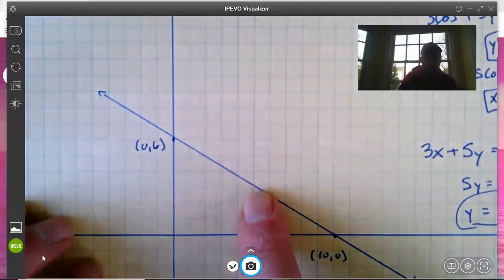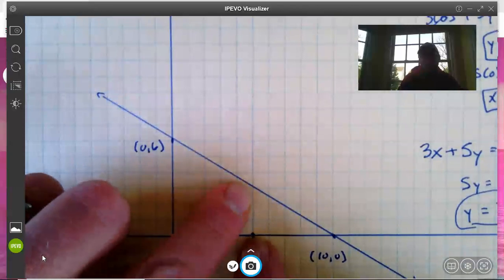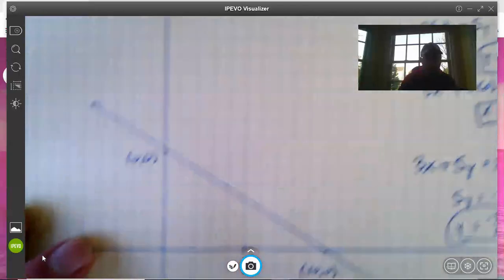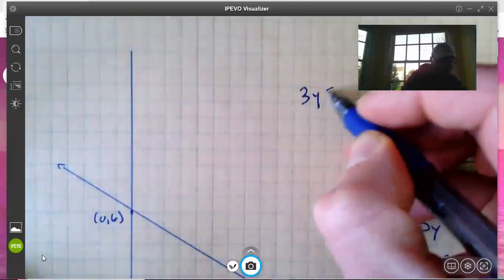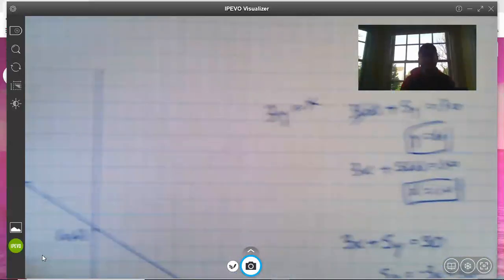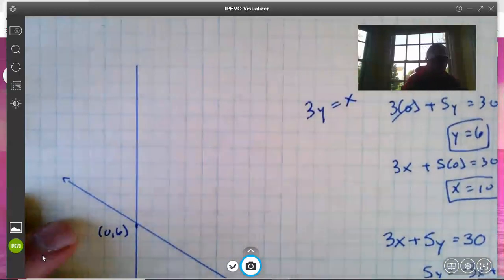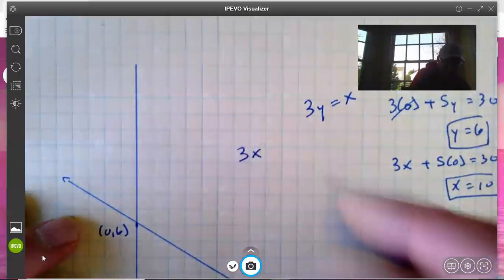So we're looking for a point on the line where the x-coordinate is three times as big as the y-coordinate. We're looking for some place where 3y = x. Well, we can just take our equation 3x + 5y = 30...